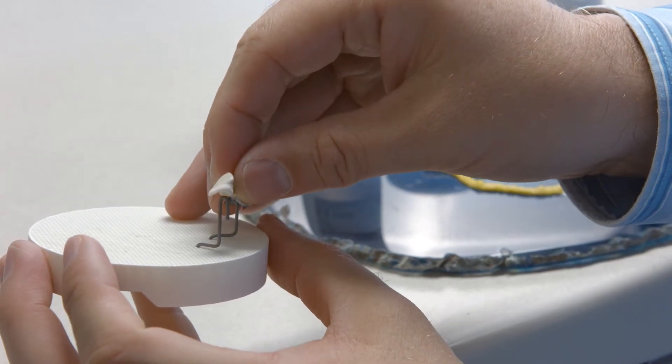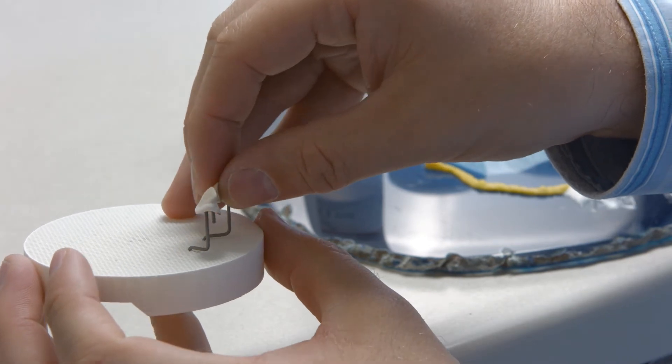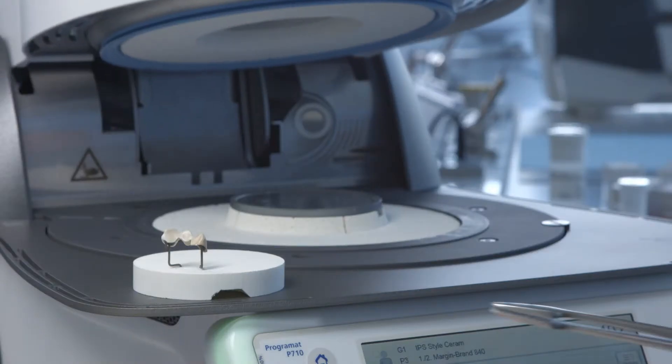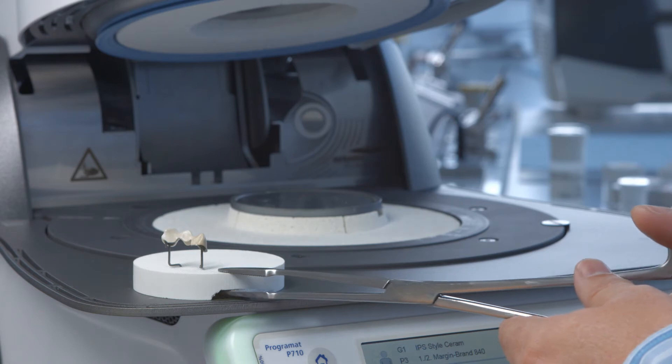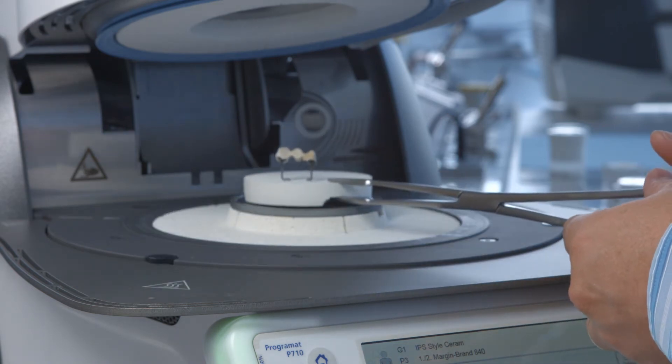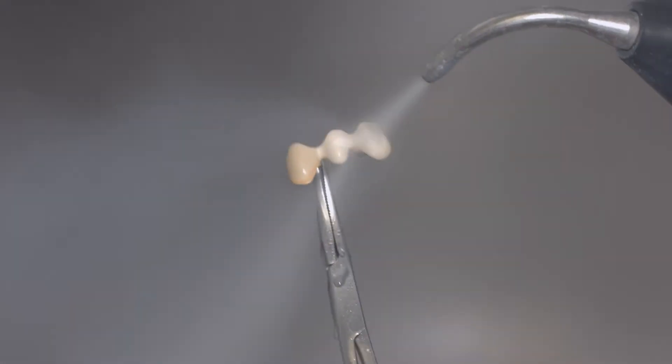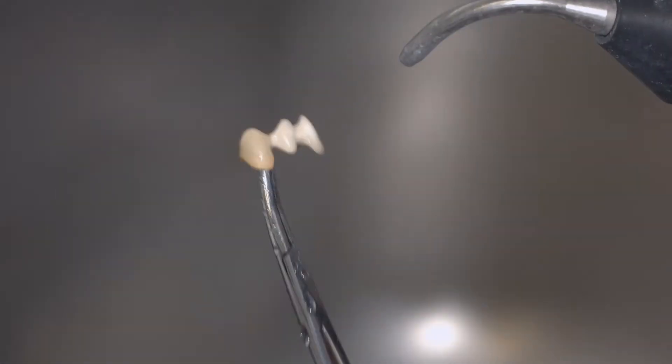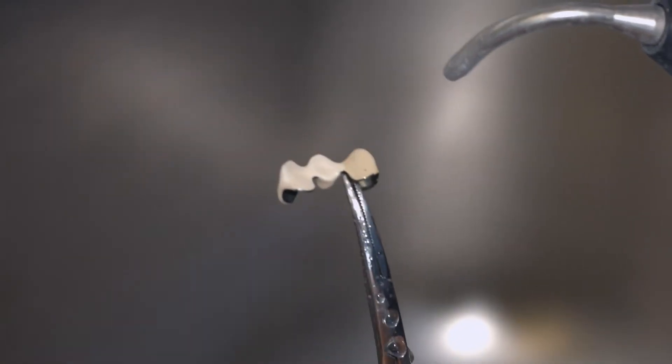Fire the IPS Style Ceram margin layers using the corresponding firing program for the first margin firing. Make sure that the framework is adequately supported. After the firing process, thoroughly clean the cooled framework coated with margin material using the steam jet.